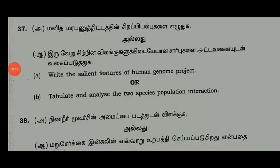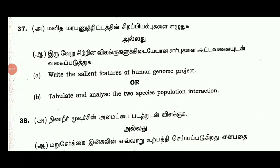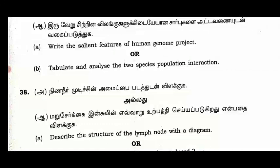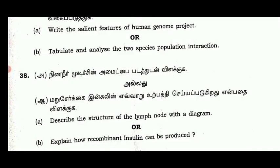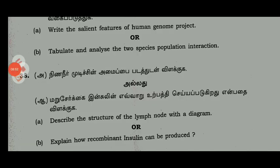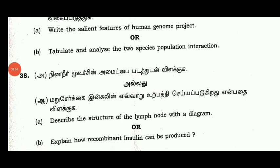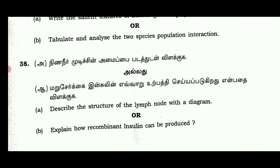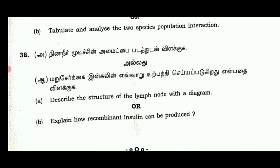If you are a biology student, analyze the two species of population interaction. Recombinant insulin is the topic. Recombinant vaccine and insulin — describe the structure of the lymph node and explain how recombinant insulin can be produced.